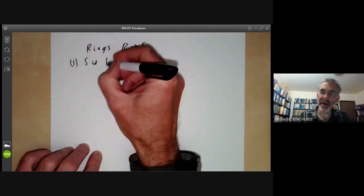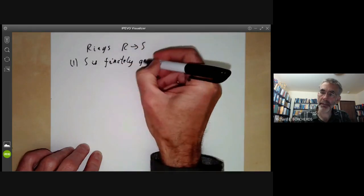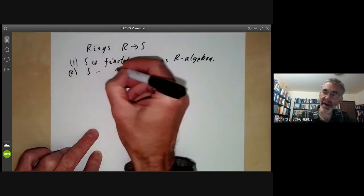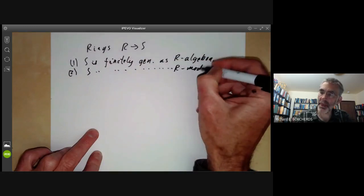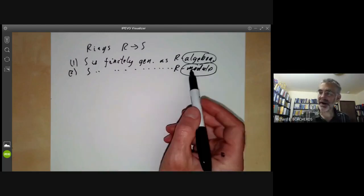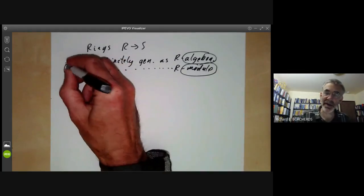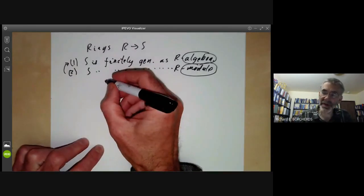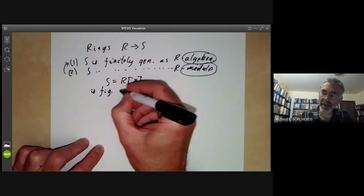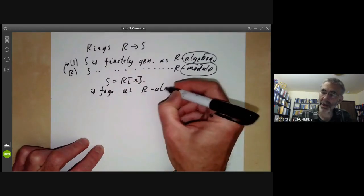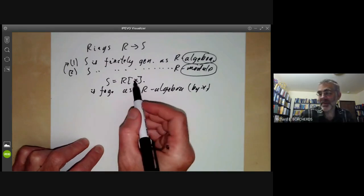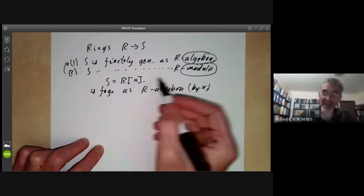The first says that S is finitely generated as an R-algebra. The second says that S is finitely generated as an R-module. These are quite different: if S is finitely generated as an R-module, it's obviously finitely generated as an R-algebra, but the converse isn't true. For instance, if S equals the polynomial ring R[X], it's finitely generated as an R-algebra by X, but not as an R-module — you need infinitely many generators: 1, X, X², X³, and so on.